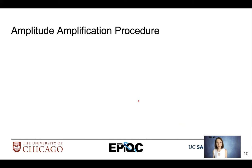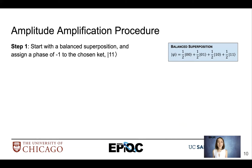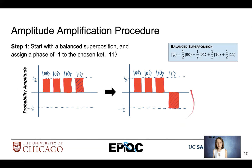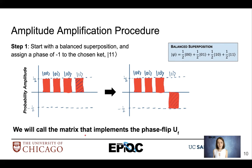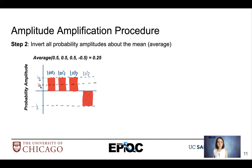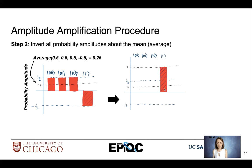The procedure for amplitude amplification starts with a balanced superposition and assigns a phase of negative 1 to the chosen ket. Drawn out, we have our probability amplitudes, and we assign a negative phase to our chosen ket. We call the matrix that implements this phase flip U_f. Once we have the inverted phase, we invert all amplitudes around the mean or average. Taking the average of all probability amplitudes gives 0.25, and inverting all amplitudes around that mean causes all other kets to go to 0 while our ket of search goes to 1.